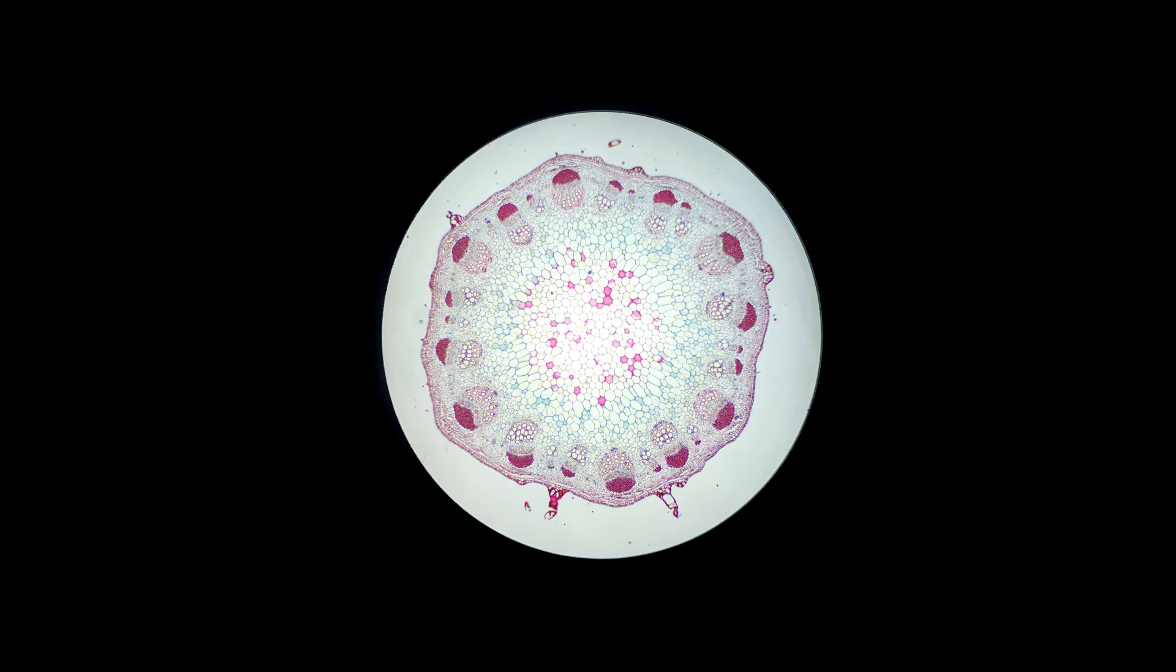Seen here is a cross section of a dicot stem, and you can really see the xylem and phloem very well. Again, those are the vascular structures that will be transporting water and nutrients. This ring goes all the way around the outside of our stem here in little bundles that form a nice ring.